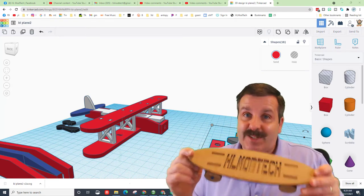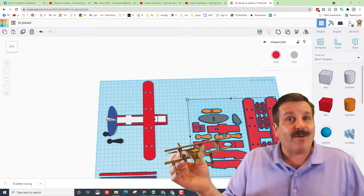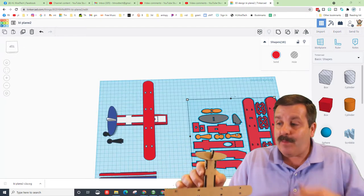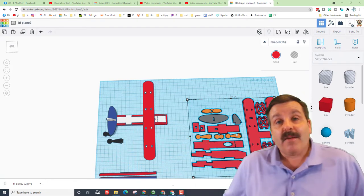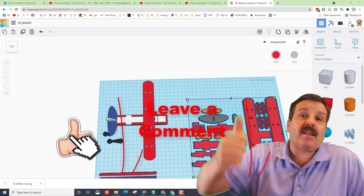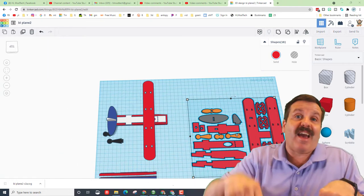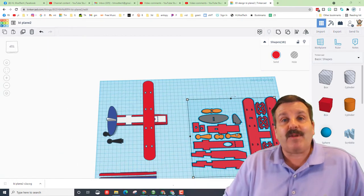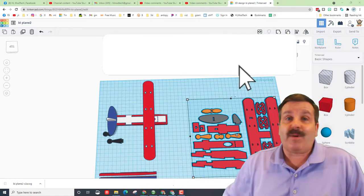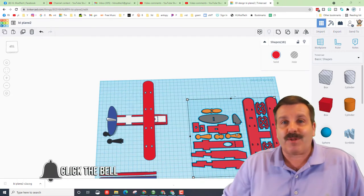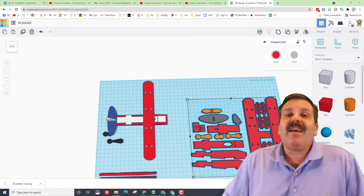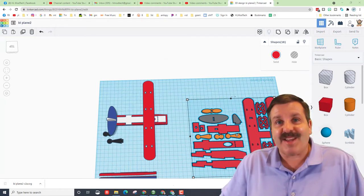All righty friends, so there you have it, an awesome laser cut biplane that now has tabs that make assembly a little easier. Friends, if you enjoyed the video please give it a like. If you got a question, comment, or suggestion, add it down below. If you haven't subscribed yet, what are you waiting for? Smash that subscribe button. And last but not least, hit that notification bell if you want to be the first to know when there's a brand new video from me, HL Mod Tech. Thanks for watching, have a great day.